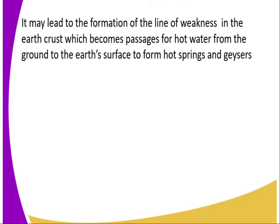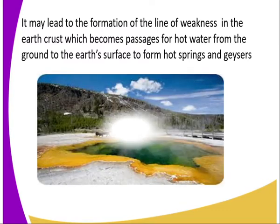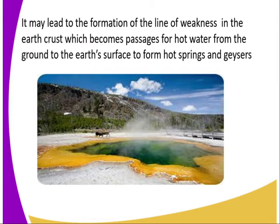Faulting may lead to the formation of lines of weakness in the earth's crust, which become passages of hot water from the ground to the earth's surface, forming hot springs and geysers. These provide a good source for geothermal power. They also act as tourist attraction sites — for example, Lake Bogoria.